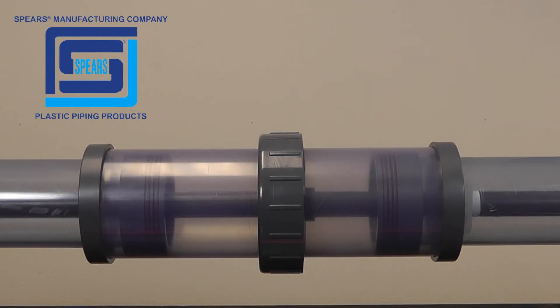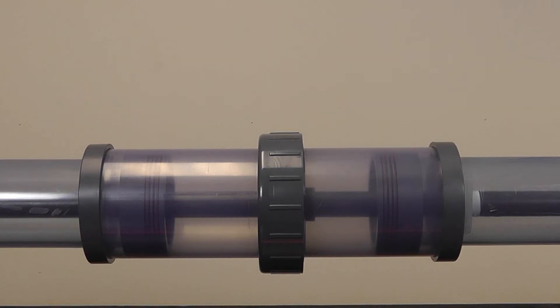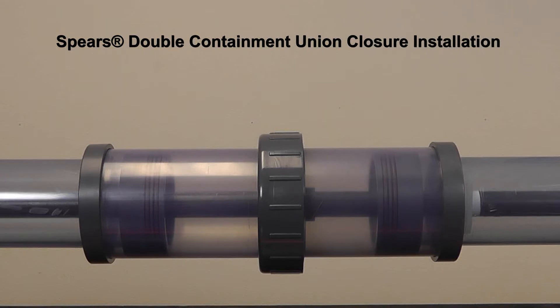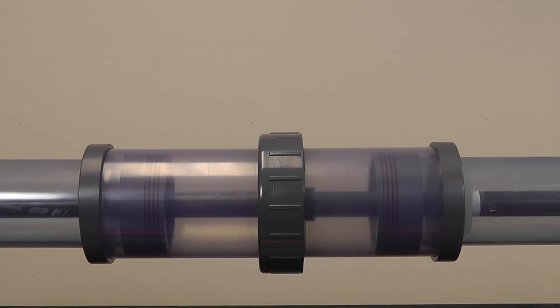Double containment system installation is best accomplished by consecutive assembly from a starting point to the end of the system. In situations where runs of carrier and containment system must meet, the Spears Double Containment Union closure fitting is a special coupling designed for joining the containment piping. Closure fittings are frequently used at the end of a system where the final termination fitting must connect to a fixed point in the system.